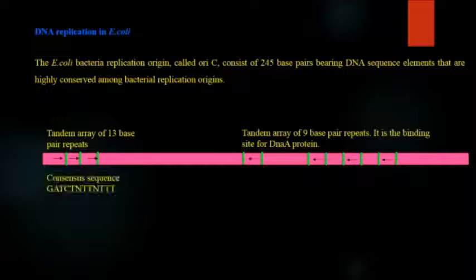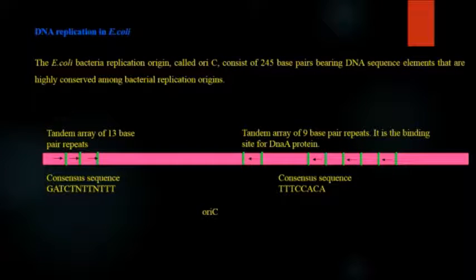The 13 base pair has a consensus sequence of GATC, TN, TTN and TTT. Whereas the 9 base pair sequence has the sequence which is very common in bacteria: TTT, CCA, CA. The GATC region is responsible for distinguishing between the parental strand and its offspring, and this is known as OriC.